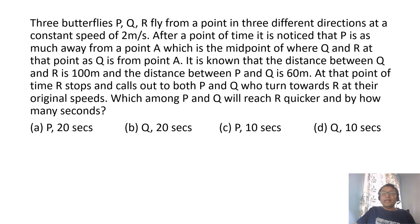Three butterflies P, Q, R fly from a point in three different directions at a constant speed of 2 meters per second. After a point, it is noticed that P is as much away from point A, which is the midpoint of Q and R. So let's draw Q and R. Midpoint is A. So P is as much away from A. So all these three has to be equal. So P is as much away from point A, which is the midpoint of Q and R as point Q is from A.